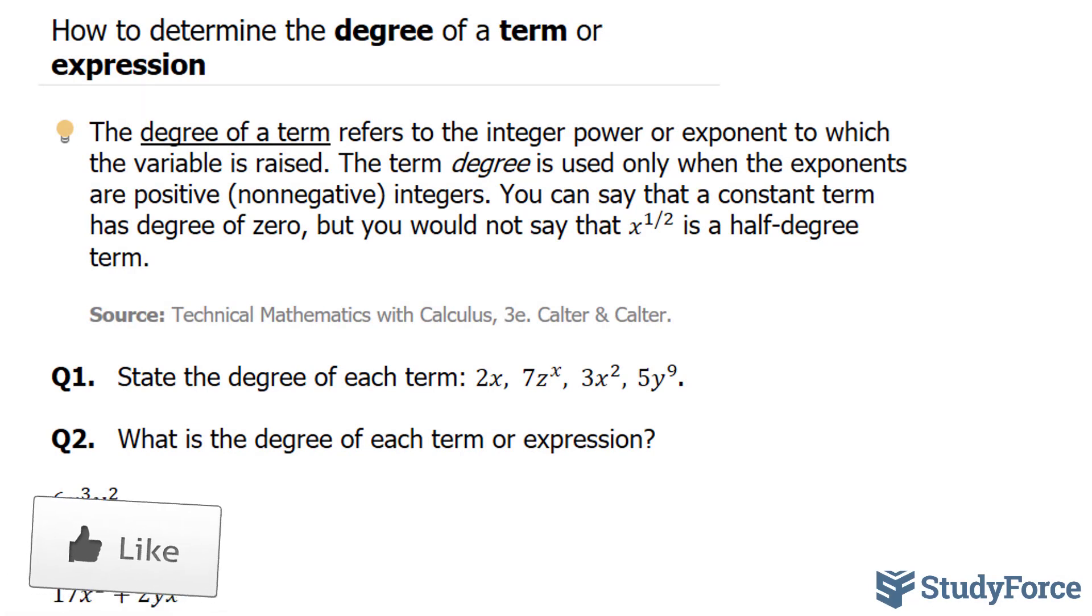2x would have a degree of one. And the reason for that is because x is raised to a power of one, even though it's not written. We assume that it's there.